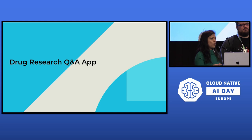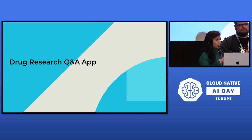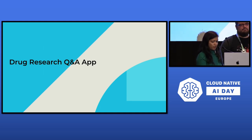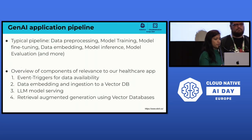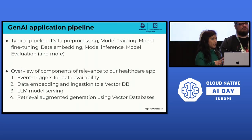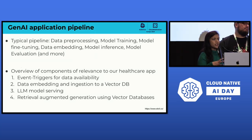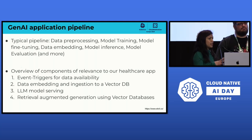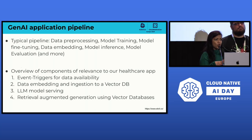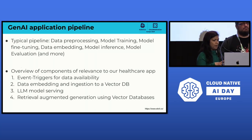We'll now discuss a drug research Q&A app developed based on engagements in the field. A typical AI pipeline has a number of different components: data pre-processing, model training, model fine-tuning, data embedding into a vector database, model inferencing, model evaluation, and many more. We're going to use only a few of these components most relevant to our healthcare app.